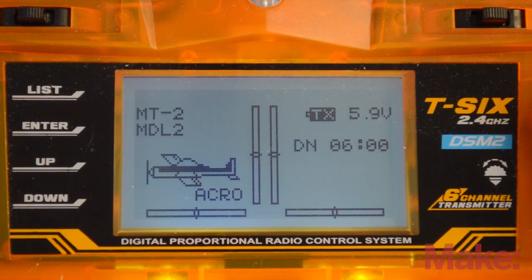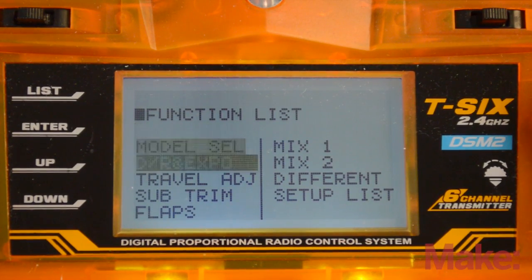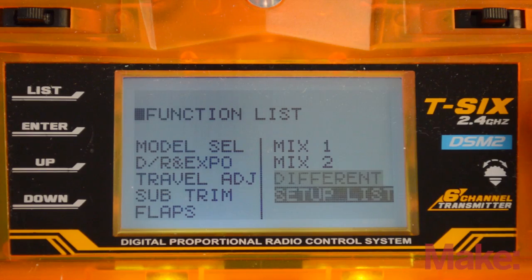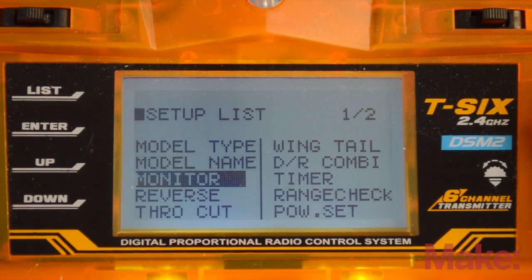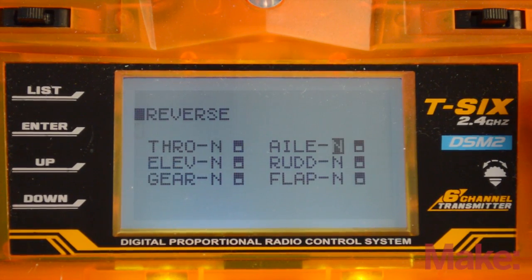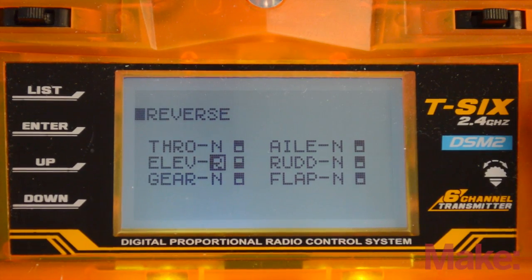Going into the menu, we hit the side scroll. We're going to scroll down to setup list and going to reverse.